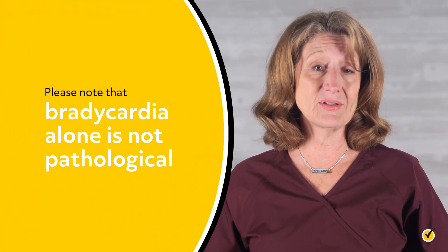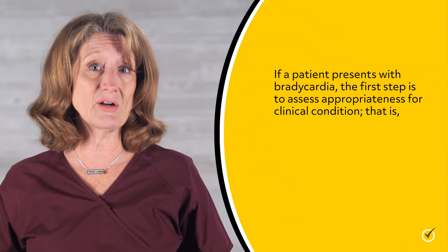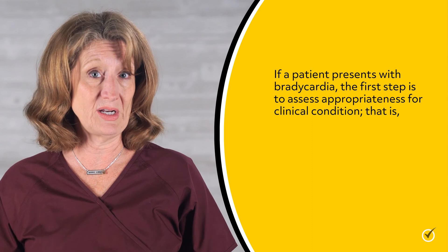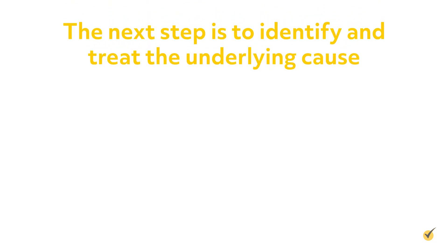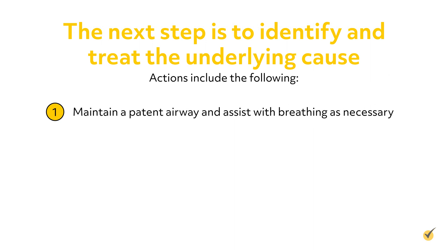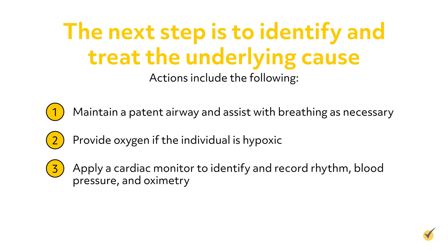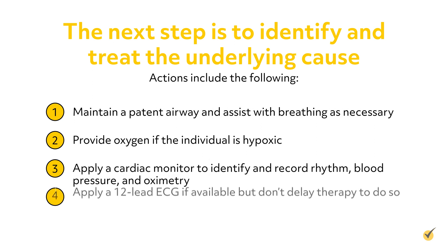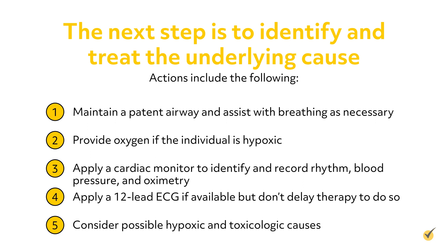Note that bradycardia alone is not pathological. Asymptomatic bradycardia is normal in some individuals such as athletes and women of small stature. If a patient presents with bradycardia, the first step is to assess appropriateness for clinical condition — that is, are there symptoms present? The next step is to identify and treat the underlying cause. Actions include: maintain a patent airway and assist with breathing as necessary, provide oxygen if hypoxic, apply a cardiac monitor to identify and record rhythm, blood pressure, and oximetry, apply a 12-lead ECG if available but don't delay therapy to do so, and consider possible hypoxic and toxicologic causes.